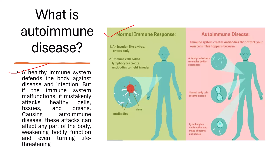In a normal immune response, an invader like a virus enters the body, and then immune cells called lymphocytes create antibodies to fight invaders. Whereas in autoimmune disease, the immune system creates antibodies that attack your own cells. This happens because a foreign substance resembles bodily substances, or normal body cells become altered, or lymphocytes malfunction and make abnormal antibodies.